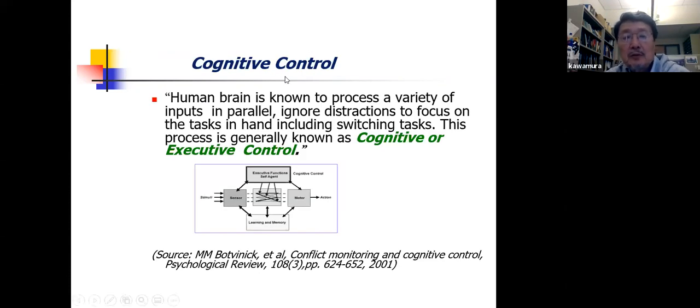So what is cognitive control? Well, according to the psychology field, human brain is known to process a variety of inputs in parallel, ignore distractions to focus on the tasks in hand, including switching tasks. And this process is generally known or called as cognitive or executive control. And this is one of the literature we reviewed.